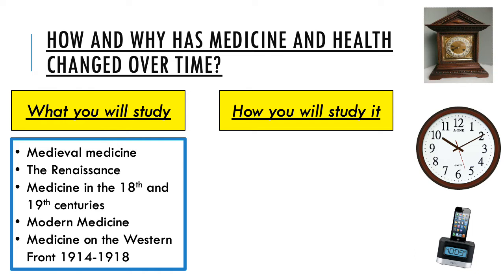We'll tackle medieval medicine to start with, then the period known as the Renaissance, medicine in the 18th and 19th centuries, and we'll finish the main bit of the course by looking at modern medicine. There is also a Medicine on the Western Front 1914 to 1918 section, because within this unit you also have to do a source inquiry looking specifically at the British section of the Western Front — the trenches in the First World War, and the injuries, illness and treatments that existed there. We will do that bit at the end of the rest of the medicine course.